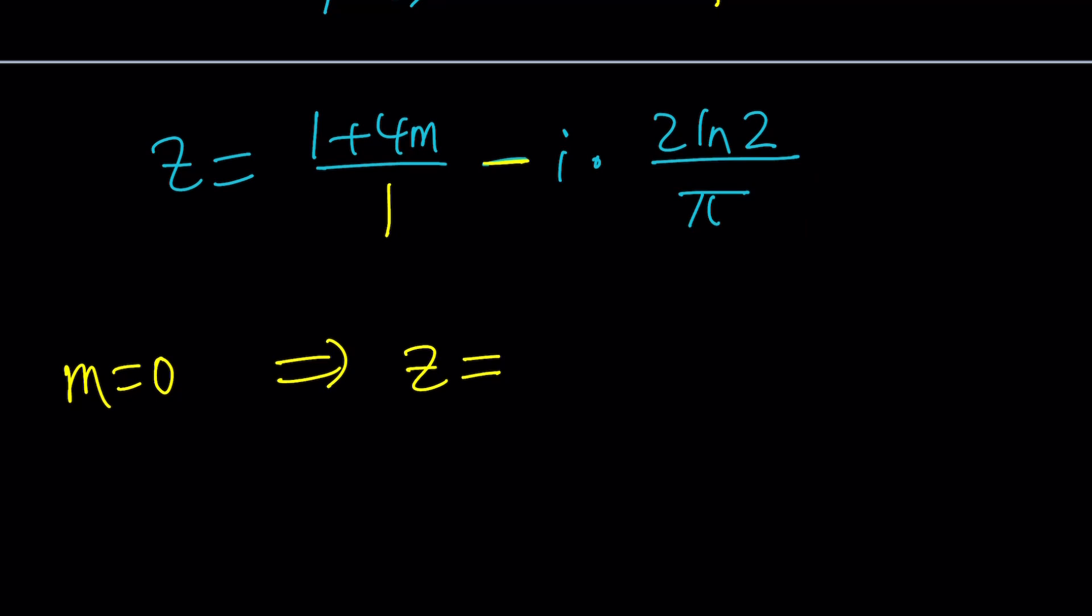When m is equal to 0, it's just going to give me 1 minus i times 2 ln 2 over pi. So that looks like a solution, but I also want to talk about something else, which should hopefully give us the exact same solution. But again,